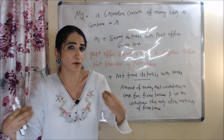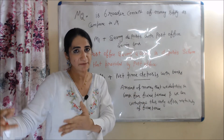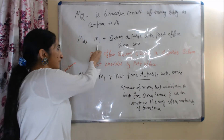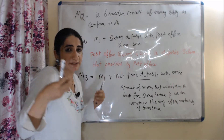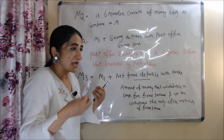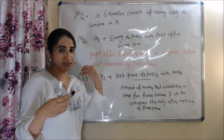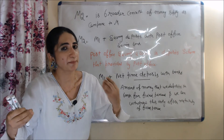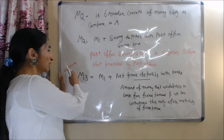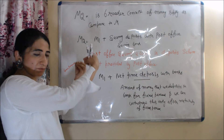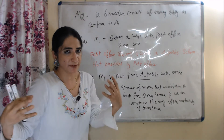Now we talk about M2. M2 is a broader concept of money supply as compared to M1. M2 is equal to M1 plus saving deposit with post office saving bank. As we all know, post office saving account is a deposit scheme provided by post office. So M2 includes all components of M1 plus saving deposit with post office saving bank.